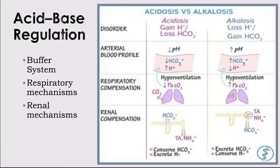The respiratory mechanism is the second line of defense to restore normal pH. The lungs control carbonic acid supply through CO2 retention or removal. When pH is too acidic (below 7.35), the lungs remove CO2 through rapid deep breathing, reducing carbonic acid. When pH is too alkaline, the lungs conserve CO2 through shallow respirations. This works with the carbonic acid and sodium bicarbonate buffer system to maintain acid-base balance.